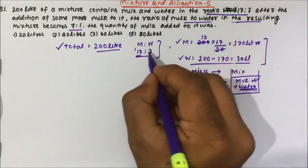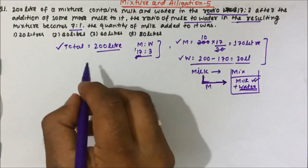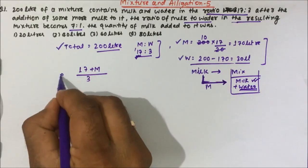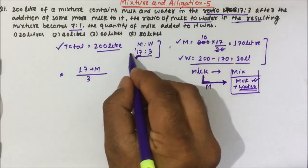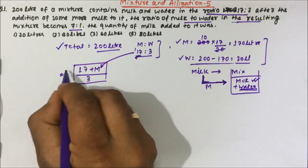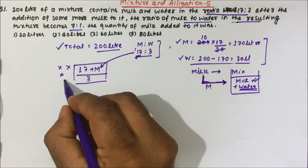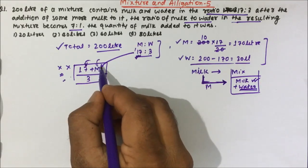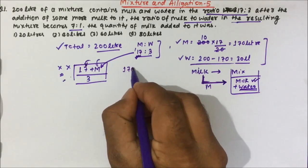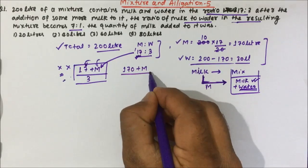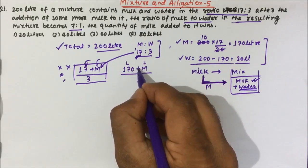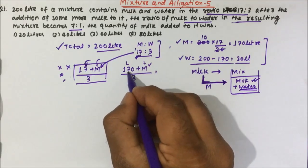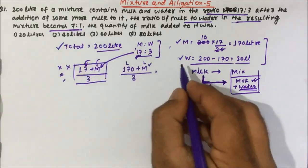Earlier the milk was 170 liters, and now we are going to add m liters of milk, so 170 plus m. Water remains 30 liters. See, this is the ratio — we cannot add a value directly to a ratio. Many students will start doing 17 plus m over 3, and this is completely wrong. In ratio, we cannot add some value. So here 170 is the actual liters of milk, and we are going to add m liters of milk into that, divided by 30 liters of water.